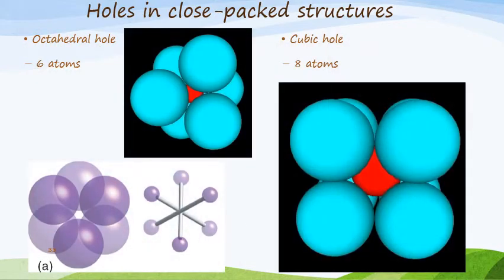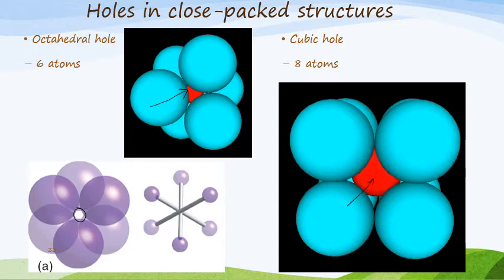The other two holes: the first is an octahedral hole. An octahedral hole is when we have six atoms or six spheres packed in close proximity to one another, and you can see there will be a hole where we can fit a small sphere, clearly indicated by the red dot in the center on that diagram. The last one is the cubic hole, where we have eight atoms together. In cubic packing the hole is quite large, as indicated by the red sphere.